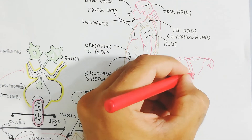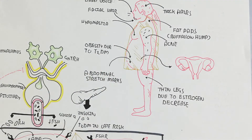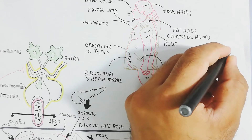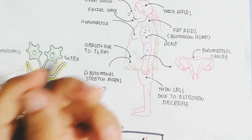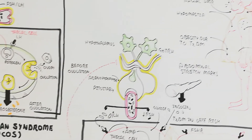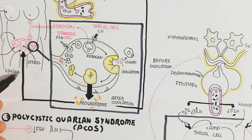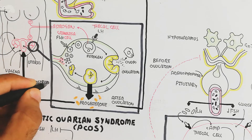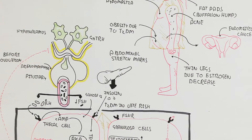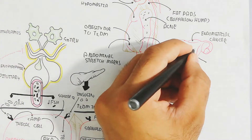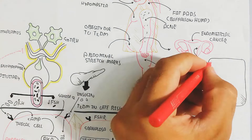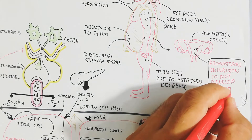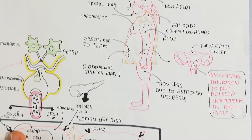Endometrial cancer occurs in the uterine wall because progesterone is inhibited — its decrease means the endometrium is not properly proliferated, thickened, or nourished. In normal function, progesterone targets the uterine wall endometrium to develop it after each cycle before pregnancy. In PCOS, progesterone does not surge, so endometrial development lacks, and without proper regulation in each cycle, endometrial cancer can result.